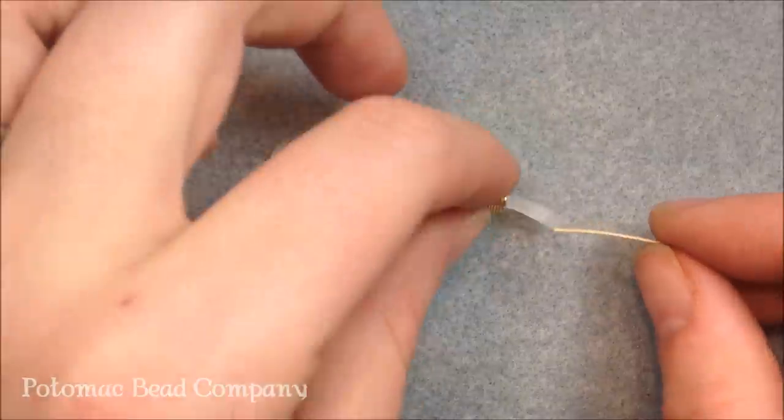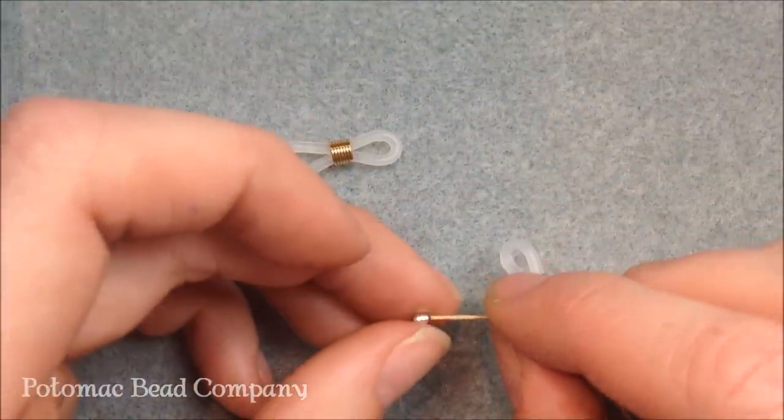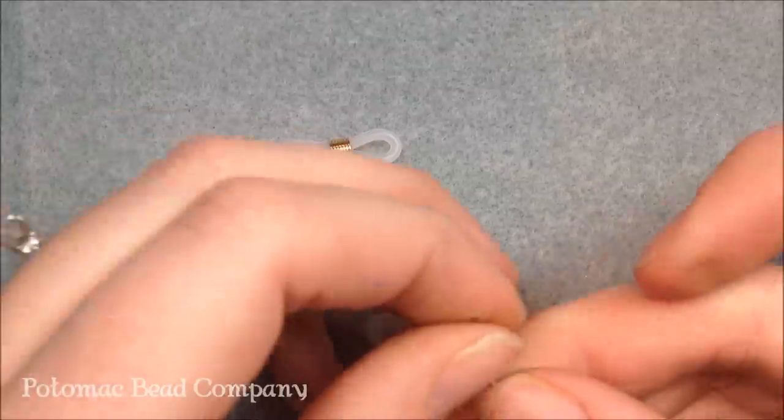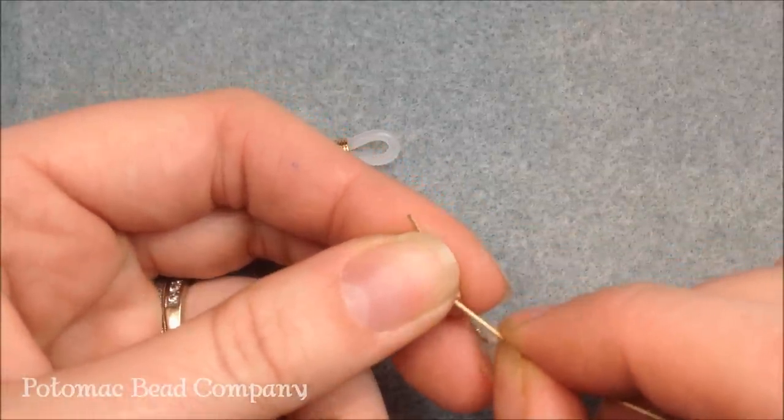All you're going to do is put your cable through the end of your eyeglass holder, crimp bead on, and the wire back through that crimp tube.